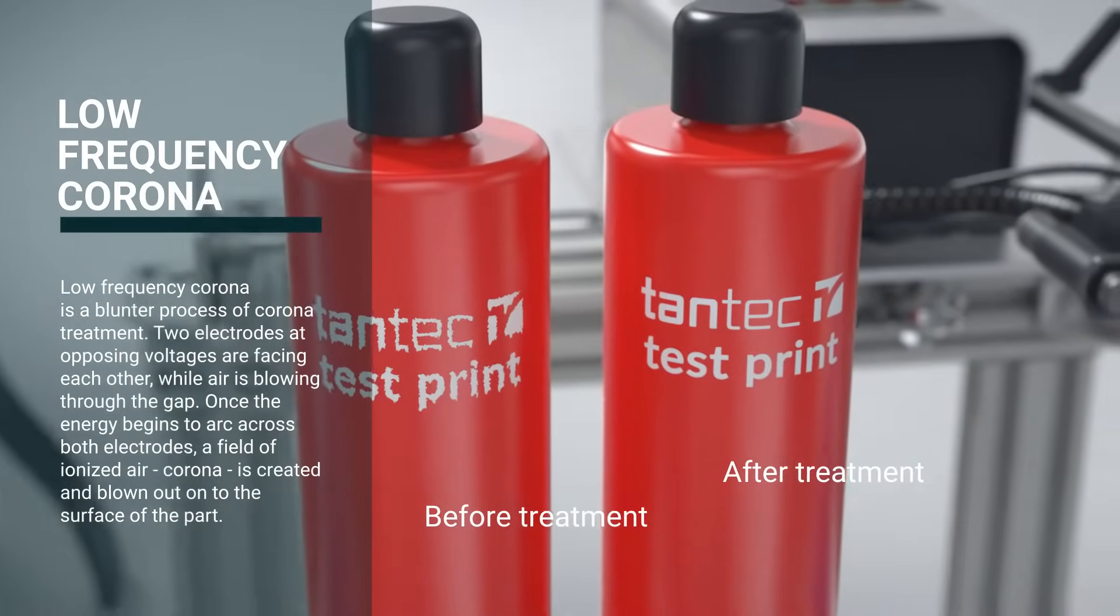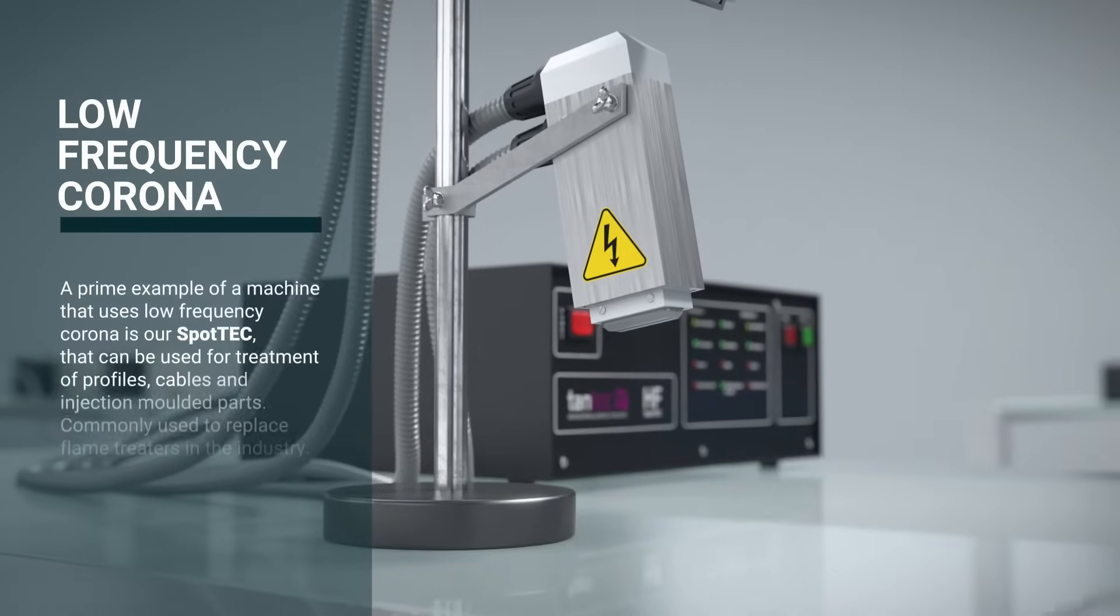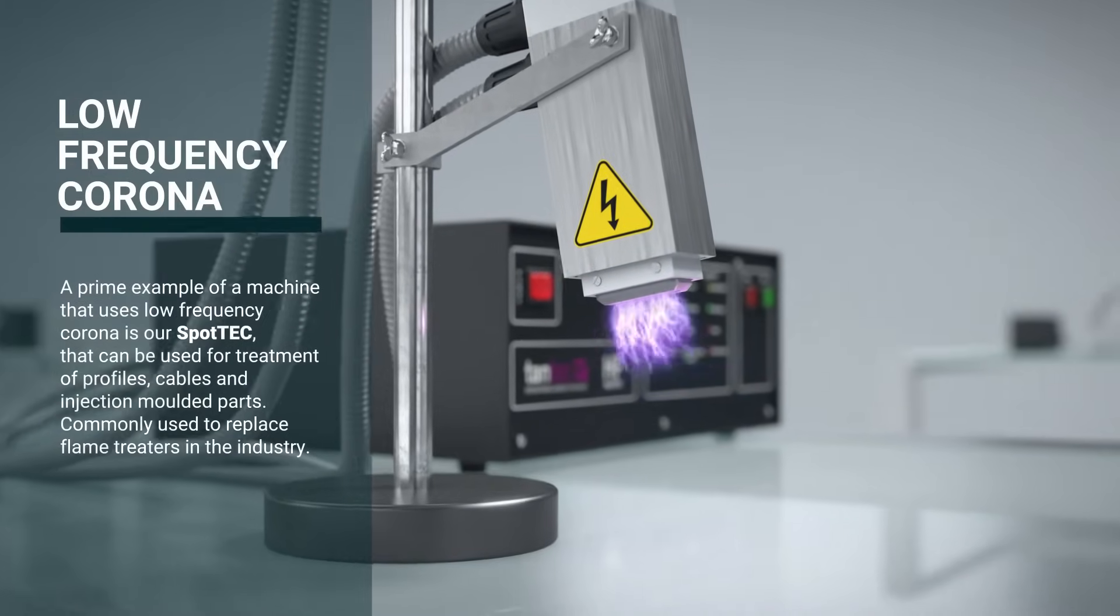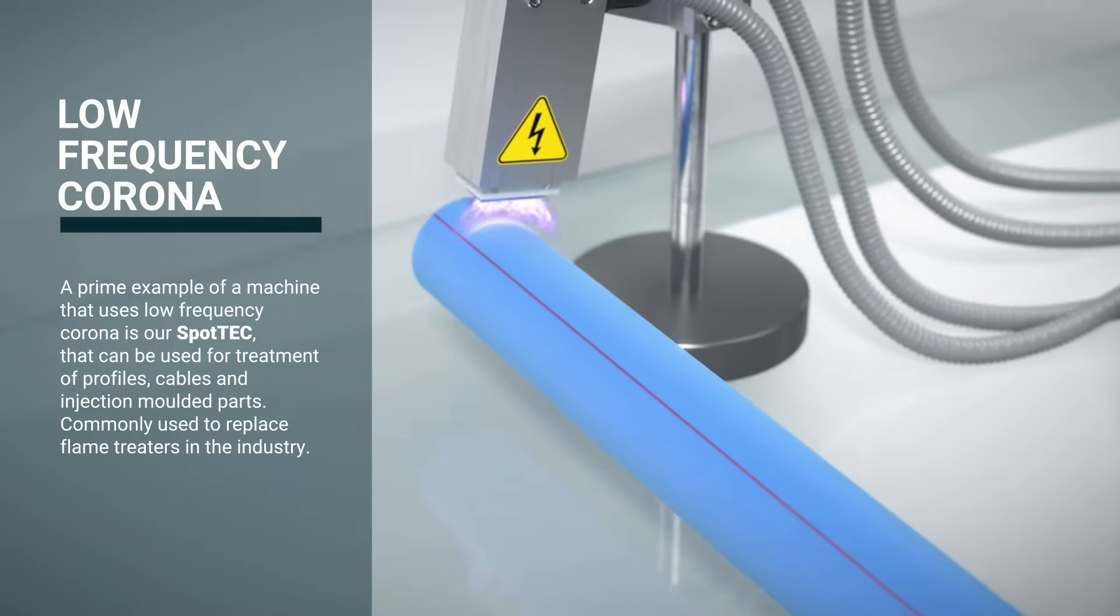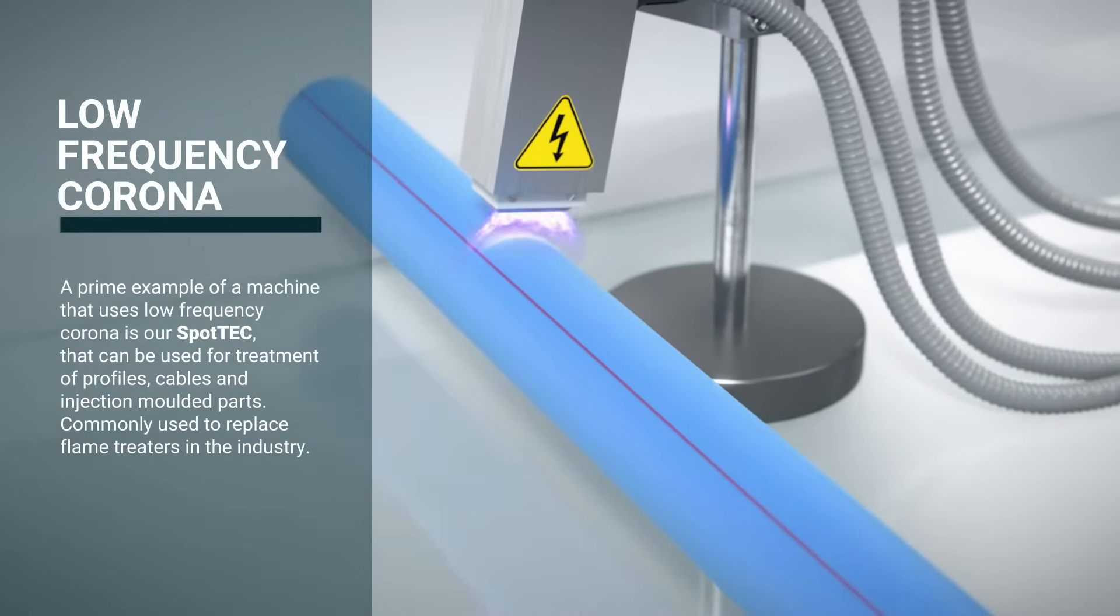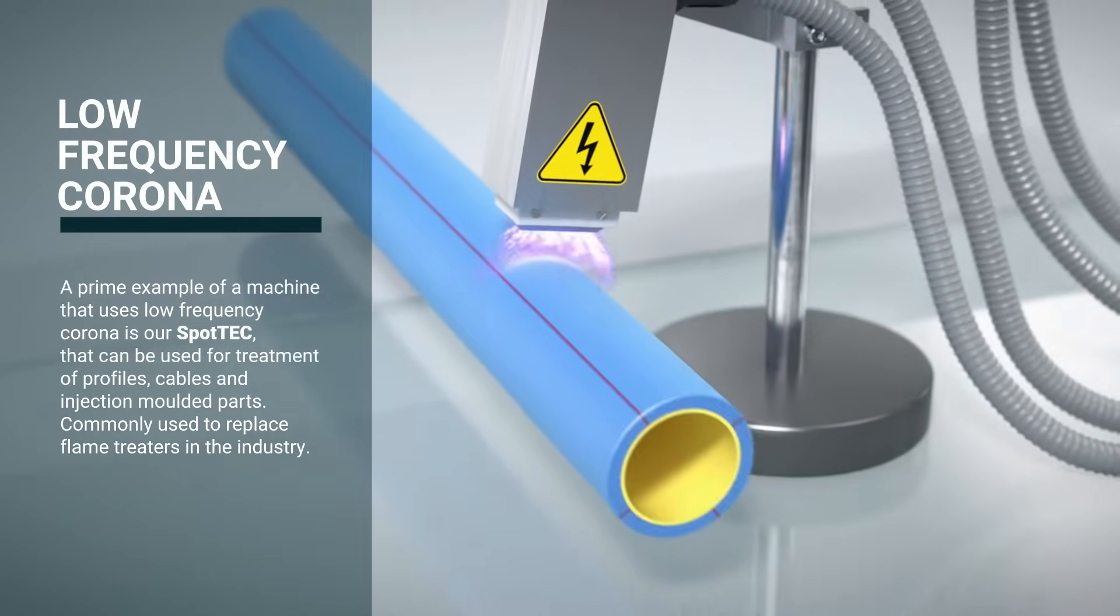A prime example of a machine that uses low-frequency corona is our SpotTec that can be used for treatment of profiles, cables, and injection-molded parts, commonly used to replace flame treaters in the industry.